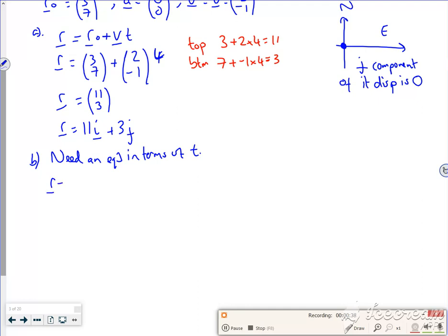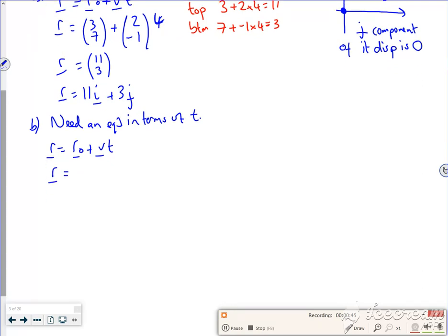So my R is R0 plus VT again, so R, my displacement, is (3, 7) plus (2, -1) times T. So I don't know what the T value is, that's what I want to find out.